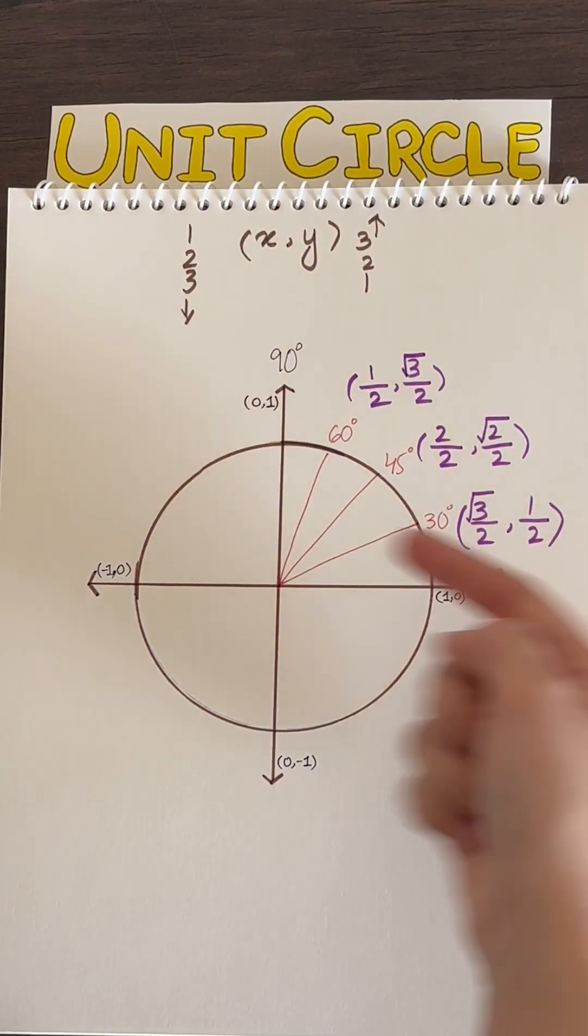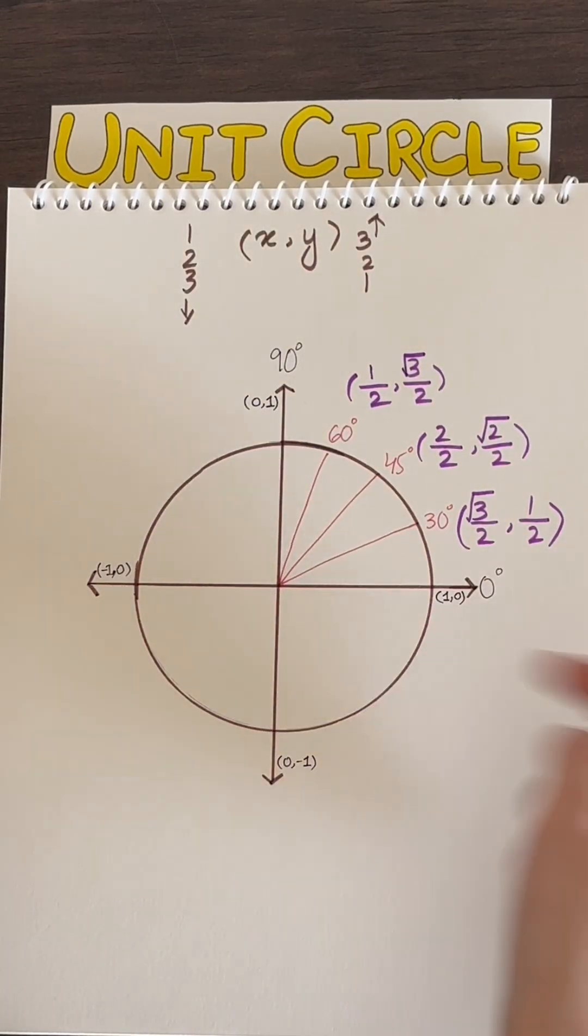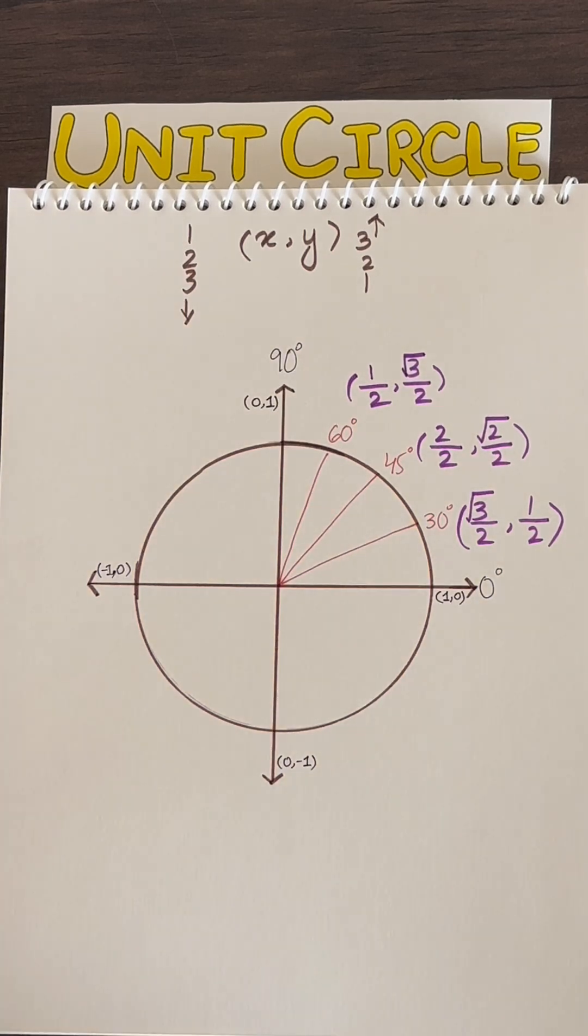In Part 1, we went over a super cool trick how to fill out all the values up here to finish up the circle. Let's now copy and paste all these values across the x and y axis.